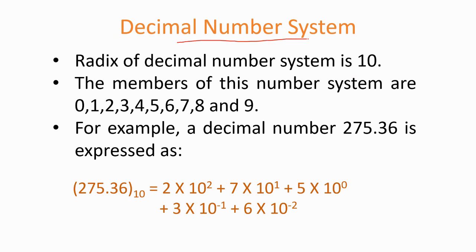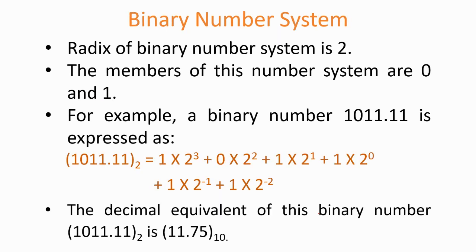The decimal number system has radix 10, so its digits range from 0 to 9. To represent a number in decimal we use powers of 10 starting from the decimal point: 10^0, 10^1, 10^2, and so on for the integer part, and 10^(-1), 10^(-2) for the fractional part. For example, 275.36 is expressed as 2 × 10^2 + 7 × 10^1 + 5 × 10^0 + 3 × 10^(-1) + 6 × 10^(-2).